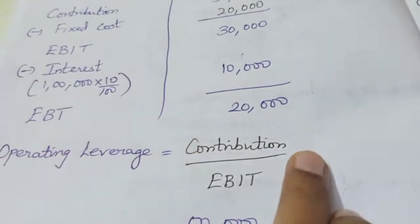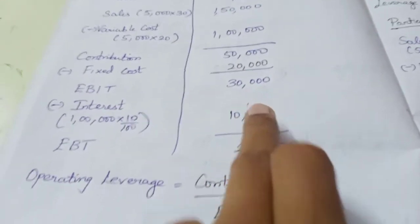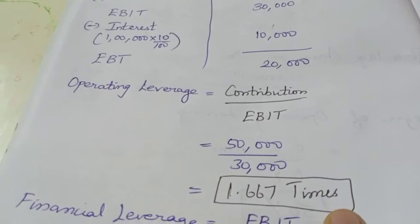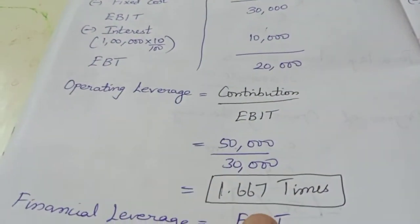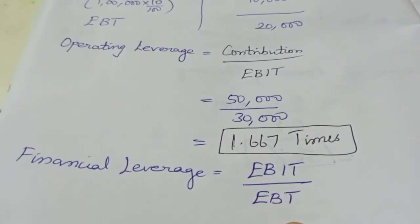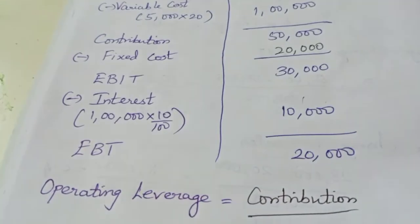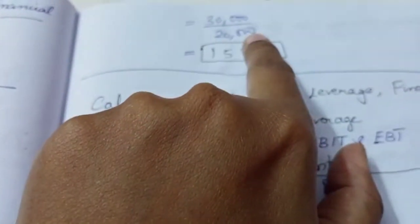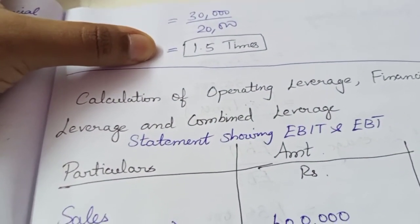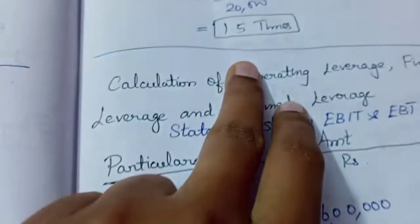Operating Leverage equals Contribution divided by EBIT. Contribution is 50,000 and EBIT is 30,000. So 50,000 divided by 30,000 equals 1.667 times — this is the Operating Leverage. Financial Leverage formula is EBIT divided by EBT. EBIT is 30,000 and EBT is 20,000. So 30,000 divided by 20,000 equals 1.5 times — this is the Financial Leverage.